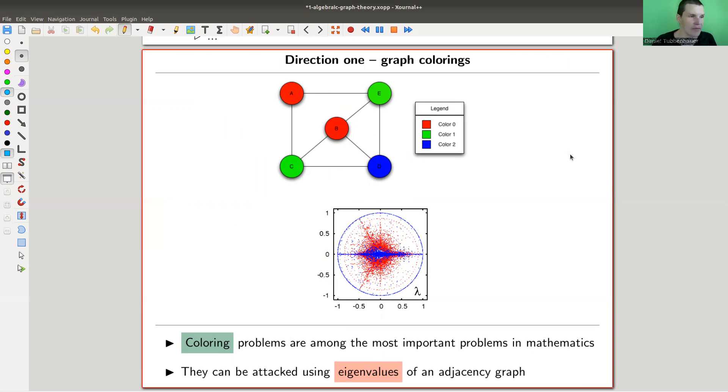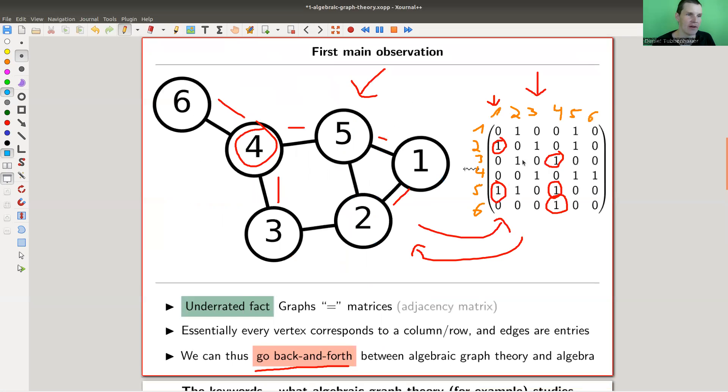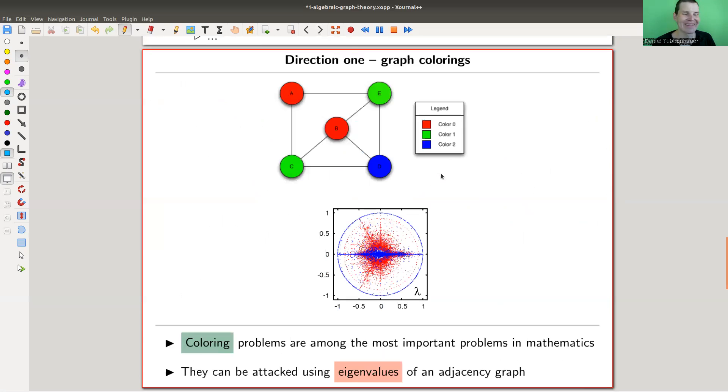Let me get you started with an example which we will discuss in future videos. Essentially, a coloring problem is a problem about eigenvalues of the adjacency matrix. So you can reformulate a coloring problem into eigenvalues. This is how eigenvalues should look like of a huge matrix plotted into the complex plane. There's some patterns within the eigenvalues.